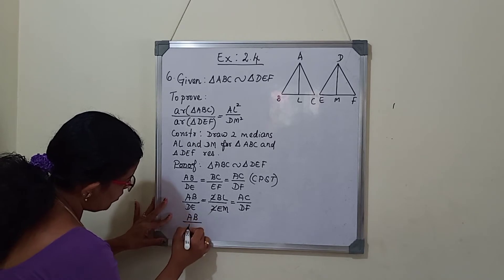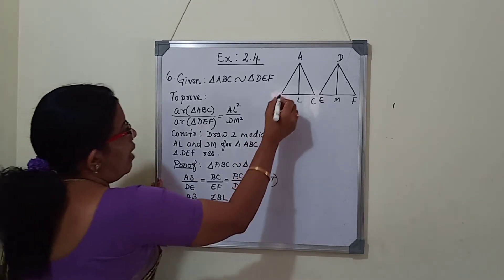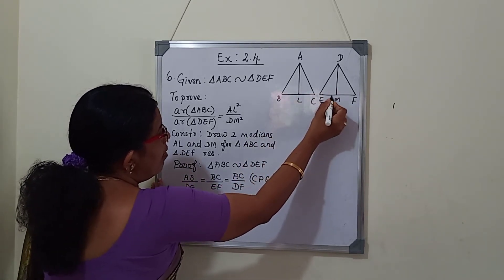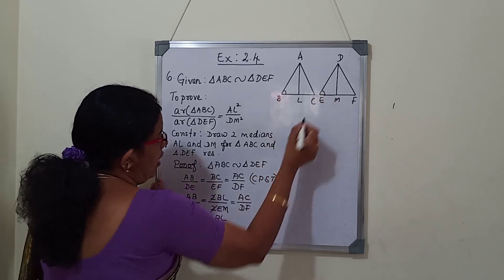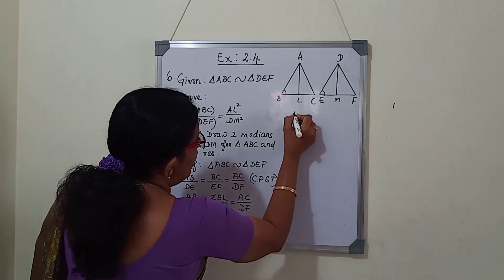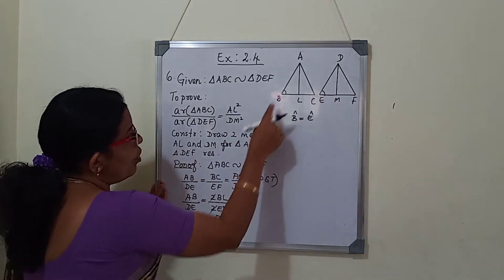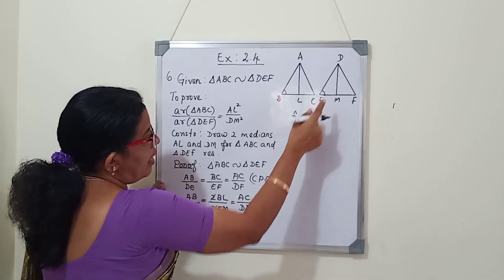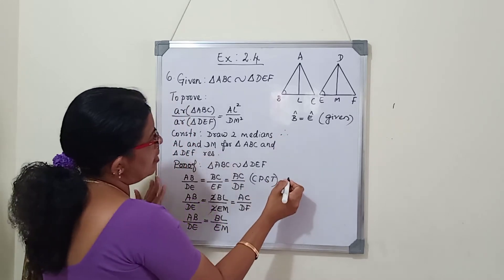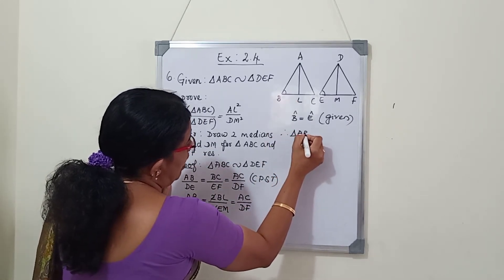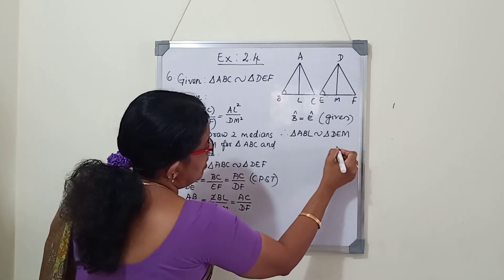We write AB by DE is equal to BL by EM. Two ratios are equal. And angle B equals angle E, because both triangles are similar and corresponding angles are equal. Since two ratios are equal and the included angles are equal, triangle ABL is similar to triangle DEM by SAS similarity criteria.